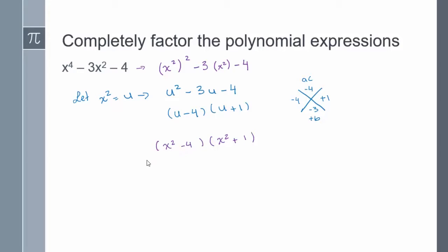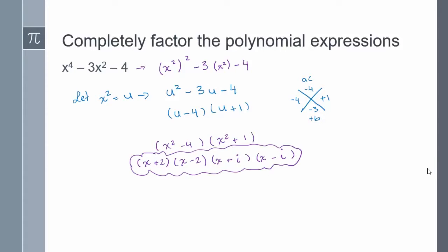x squared minus 4 is the difference of squares, so it factors into x plus 2 times x minus 2. And x squared plus 1 is the sum of squares, which means I'll have a complex factor. The square root of x squared gives x and x, and the square root of negative 1 is plus or minus i. So x squared plus 1 factors into x plus i and x minus i. The complete factored form of x to the power of 4 minus 3x squared minus 4 is x plus 2, x minus 2, x plus i, and x minus i.